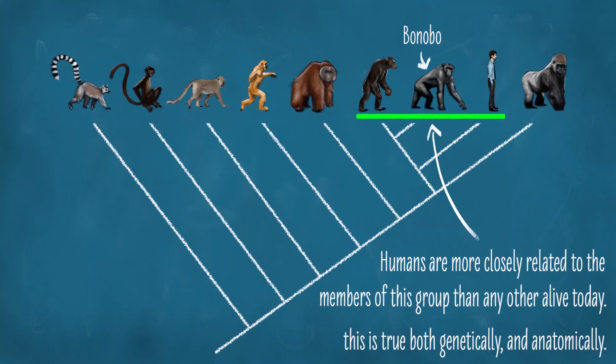That said, humans are more similar to chimpanzees and bonobos — the closest living relatives of chimpanzees — than they are to any other living group. This is true both anatomically and genetically. In fact, the amount of genetic difference between a mouse and a rat is about 10 times greater than the difference between a human and a chimpanzee. And while there are always other possible explanations for the similarity,